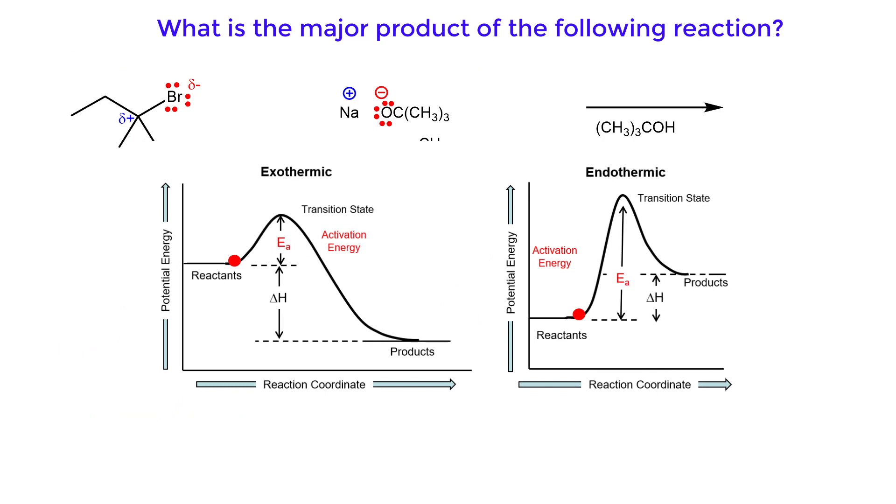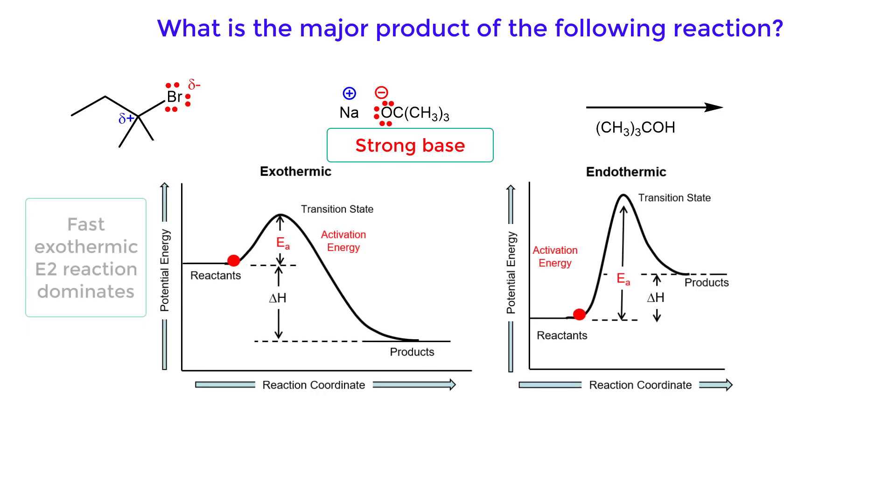A fast exothermic E2 reaction will dominate over a slow endothermic SN1/E1 reaction.